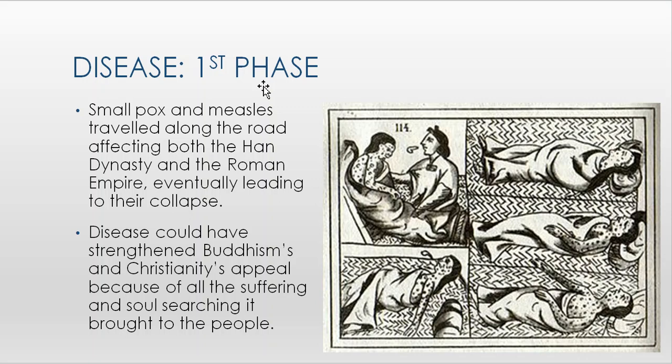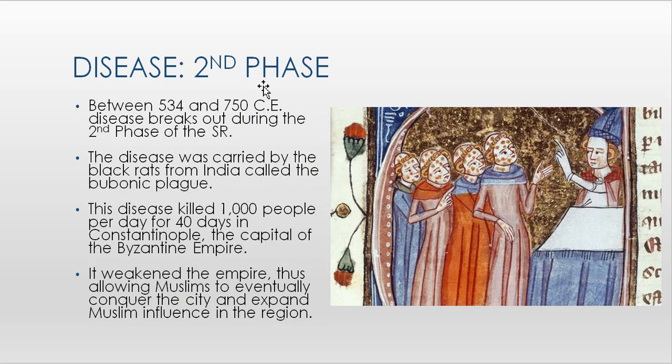Disease phase one coincides with the Han dynasty and Roman Empire. Smallpox and measles traveled along the road, affecting both empires and eventually contributing to their collapse. Disease may have also strengthened Buddhism and Christianity, as people suffering asked existential questions — why is this happening, is there a god that loves me, how can I end this suffering — which may have helped both religions flourish.